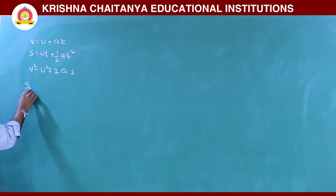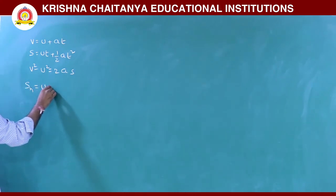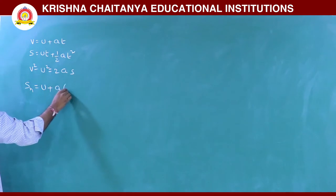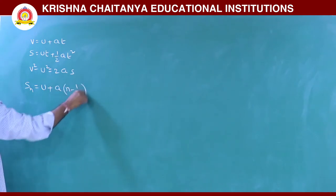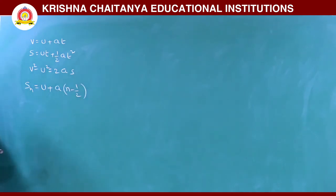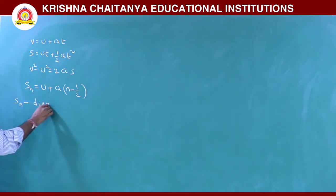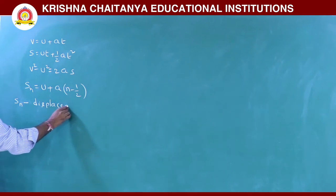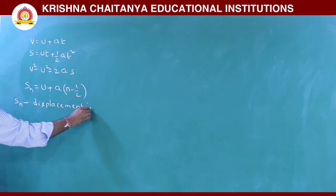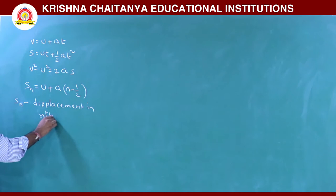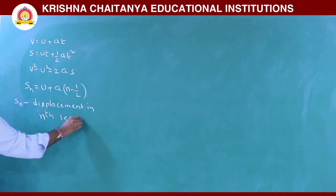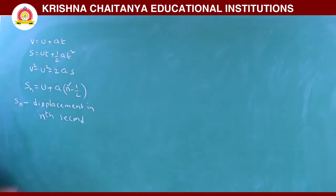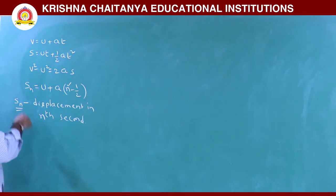Now we will derive the expression Sn = u + a(n - ½). Here Sn is the distance or displacement in the nth second. We will find the Sn expression for the nth second.